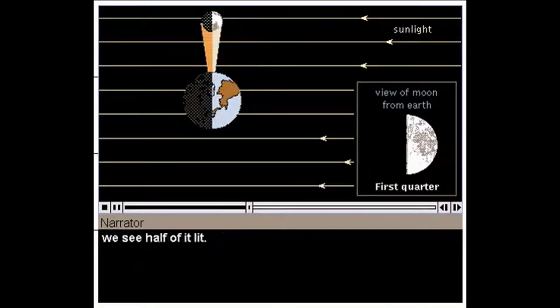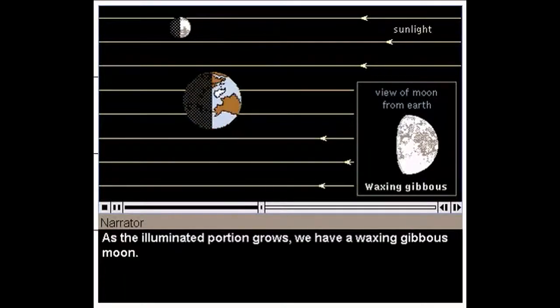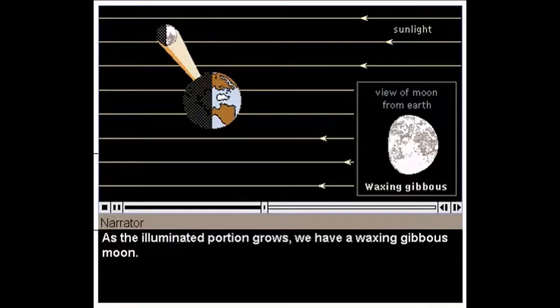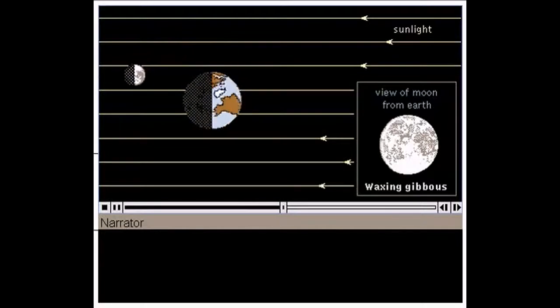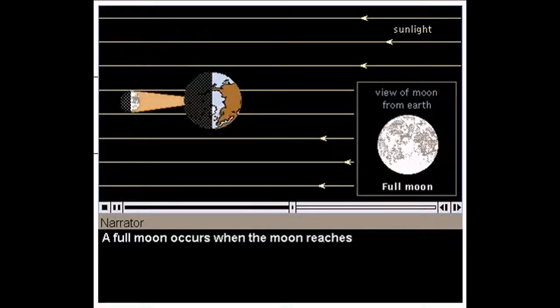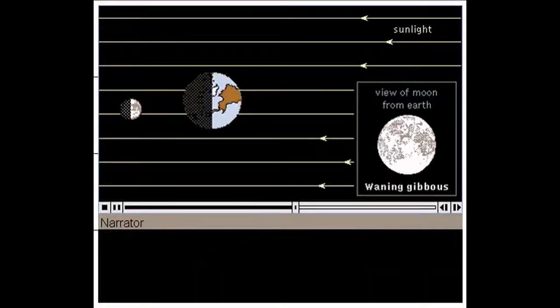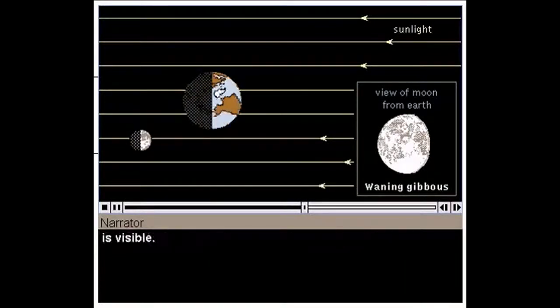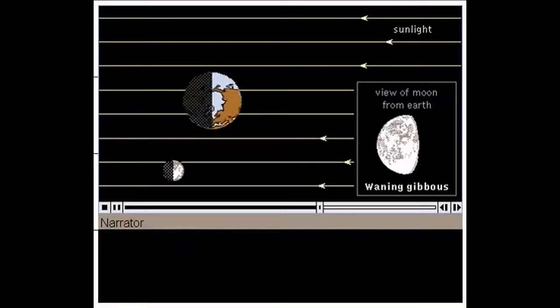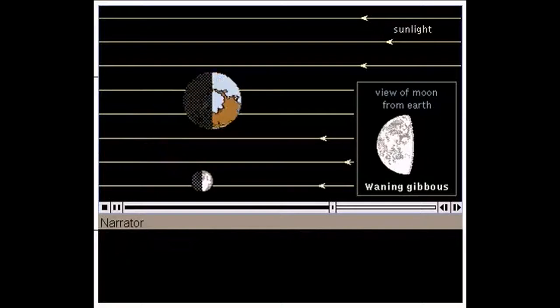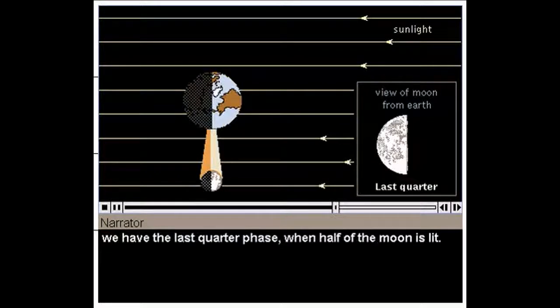When the moon reaches first quarter, we see half of it lit. As the illuminated portion grows, we have a waxing gibbous moon. A full moon occurs when the moon reaches the side of the earth opposite from the sun. Gradually, less and less of the bright side of the moon is visible. This is the waning gibbous phase. Three quarters of the way through the moon's cycle, we have the last quarter phase, when half of the moon is lit.